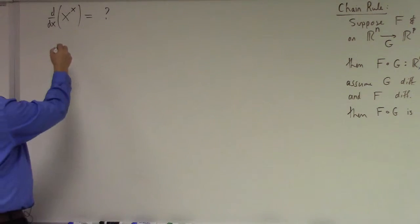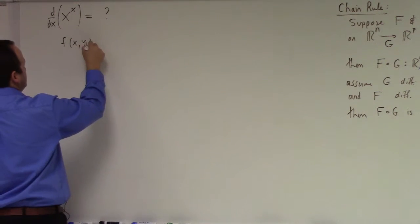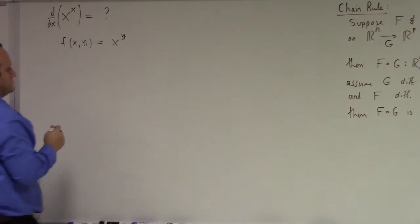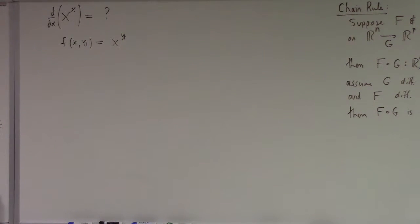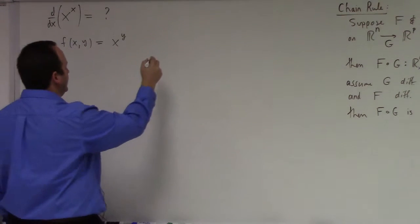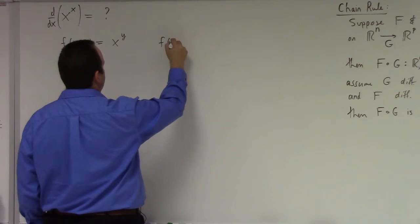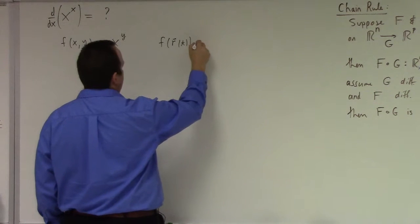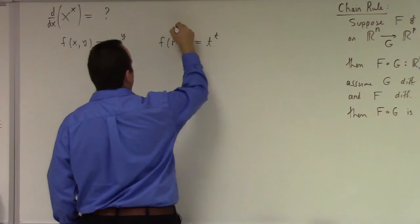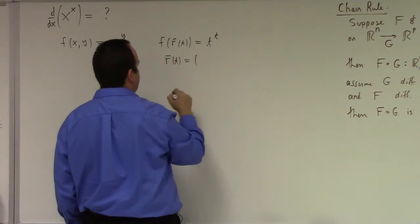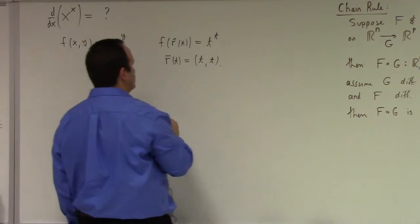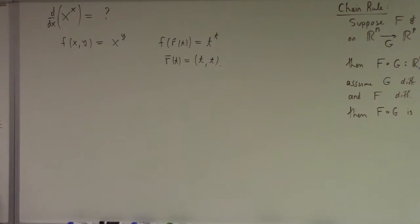But let me show you another way. Consider the function f(x,y) equals x to the y. Then, if you look at f of r of t, right, equals t to the t, you can get this from what? From r(t) is equal to what? Yeah, t comma t. So I can look at x to the x as the problem of differentiating the composite of f and this r(t).